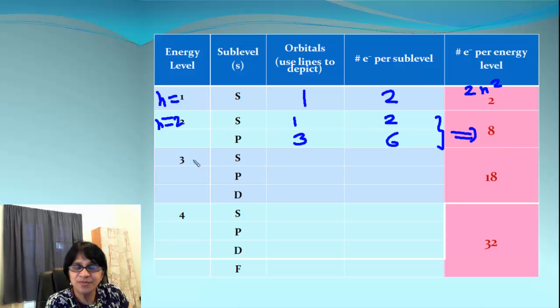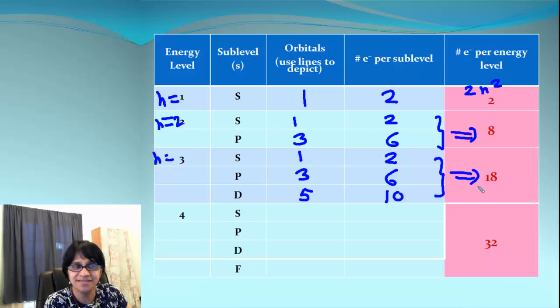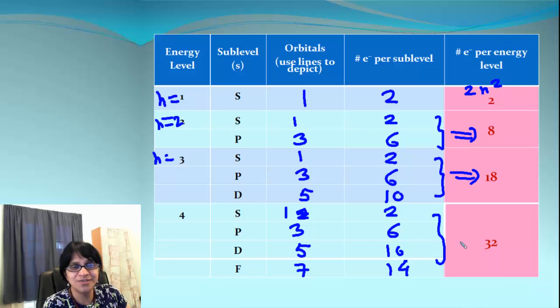So s is 1, p is 3. Now we got d added. d is 5. And electrons are 2, 6 and 10. When we add all those we end up getting 18. This is 1, 3, 5 and 7 are number of orbitals. And electrons are 2, 6, 10 and 14. When we add all those we end up getting 32 electrons there.